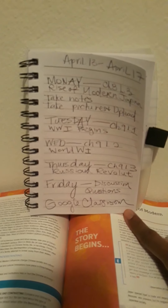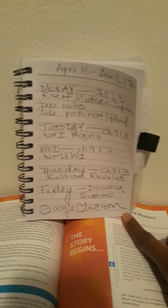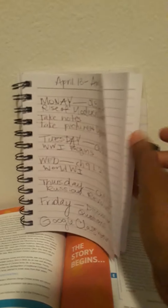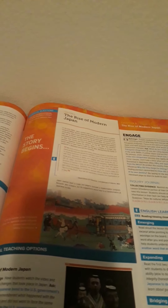Tuesday is Chapter 9, Lesson 1 — World War 1 Begins. Wednesday, Chapter 9, Lesson 2, World War 1. Thursday, Chapter 9, Lesson 2 is the Russian Revolution. Friday, I will have discussion questions in Google Classroom for you to answer. The discussion will not be live — the administration has told us to please not go live with students or parents. So everything we do will be through email or YouTube videos. You guys can make me videos if you want to ask questions. You can post comments in Google Classroom if you have questions.